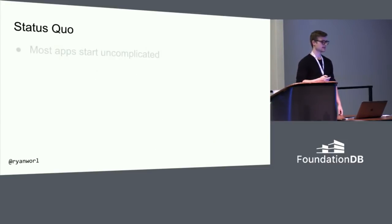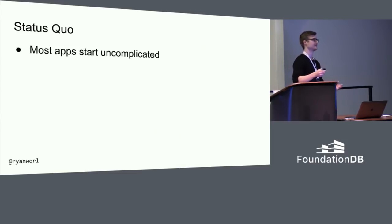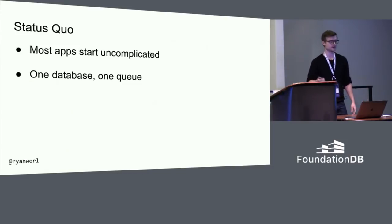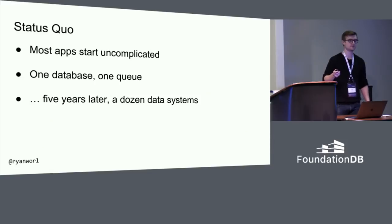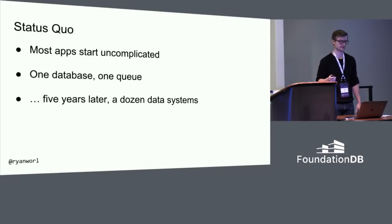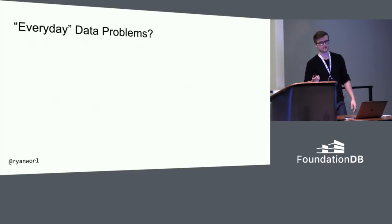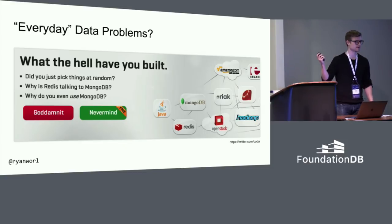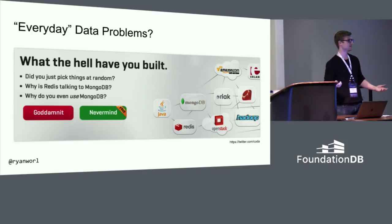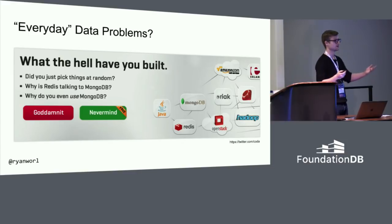The status quo today is that most apps start out uncomplicated. You don't start out building an architecture with ten different data systems. Usually it's just a database and a queue, and that gets you pretty far. But five years later you end up with a dozen systems in production and you've got to run them all. When I say everyday data problems, this is what I really mean — there are specific things that come up and you just rip tools off the shelf, and nobody thought about it; it just emerged over time.